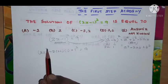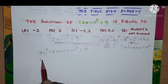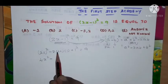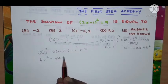Now (2x)² squared will go inside, so 2² and x² will come. 2² is 4, so 4x² minus 2 into 2 is 4, 4 into 1 is 4, so minus 4x plus 1 is equal to 9.